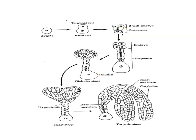The embryo progresses from the eight-cell stage to the globular stage, then to the heart-shaped stage, then to the torpedo stage, and ultimately to the mature embryo stage.